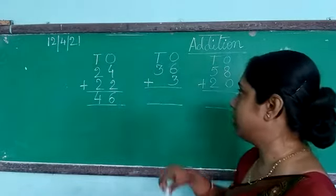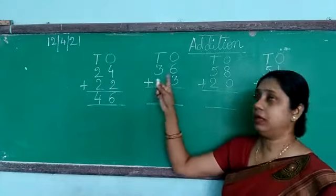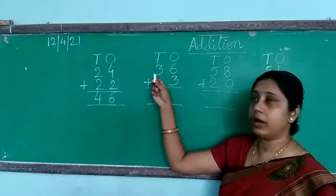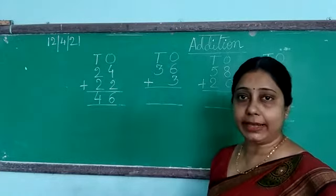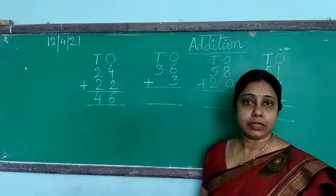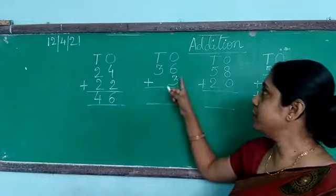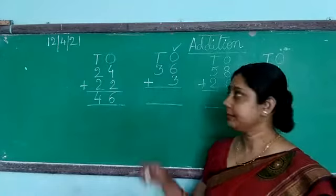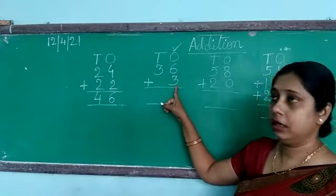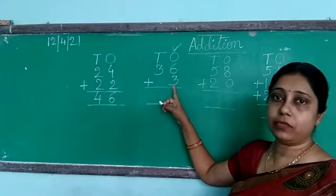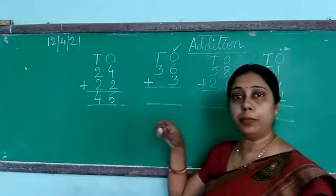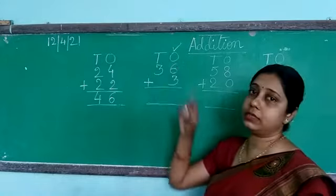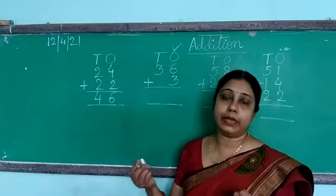Let us go to the next question. Here we have 36 plus 3. In the tens place there is only one column — that means no digit is there for the second number, so no problem. We will add the ones place first. Always add the ones place first. You may add from the bottom or from the top — whichever is easier. After 3 you may count 6, or after 6 you may count 3.